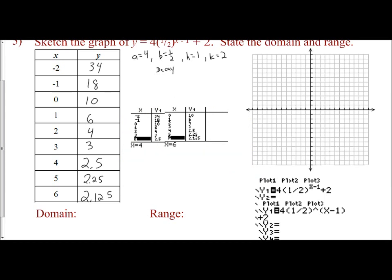Plot the points. At negative 2, you're all the way up to 34. I can't even graph it. At negative 1, I'm all the way up to 18, can't graph it. At 0, I am at 10. I can finally graph that one. But I need to remember that this means my negative 1 is all the way up here. At 1, I am at 6. At 2, I am at 4. At 3, I am at 3. At 4, I'm at 2.5.